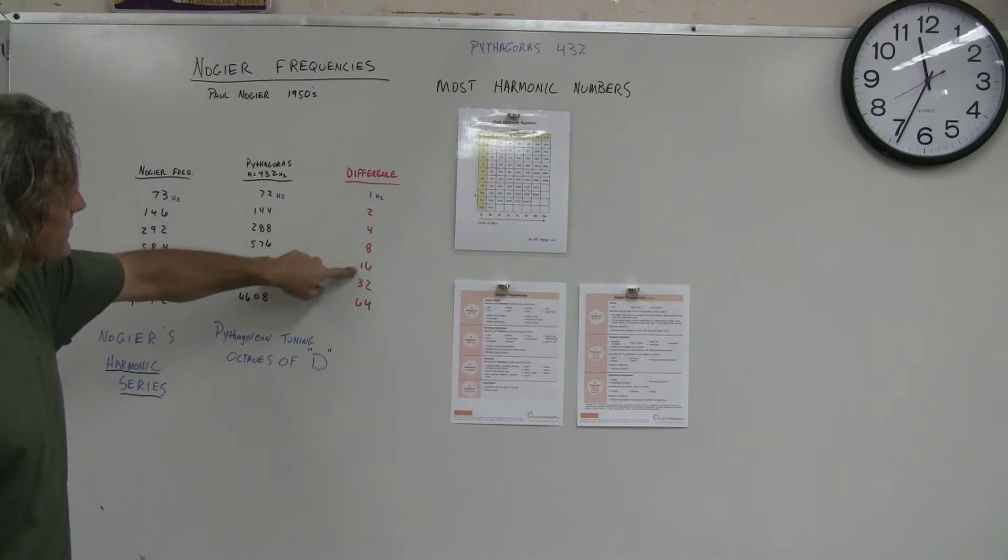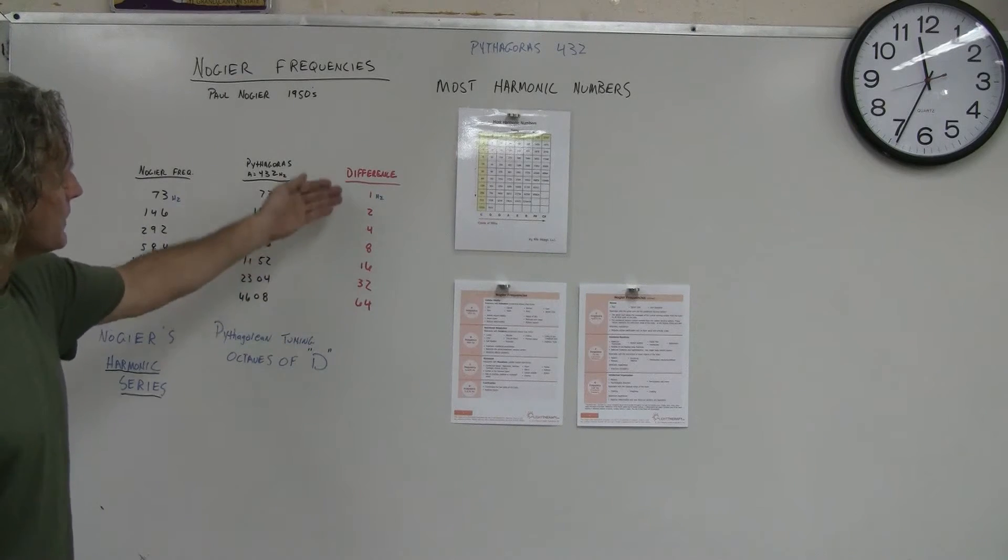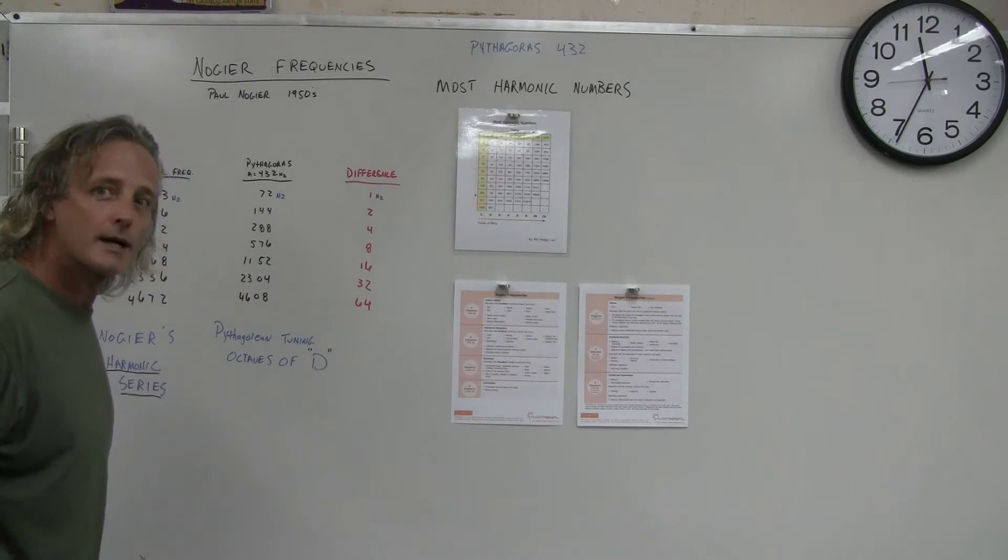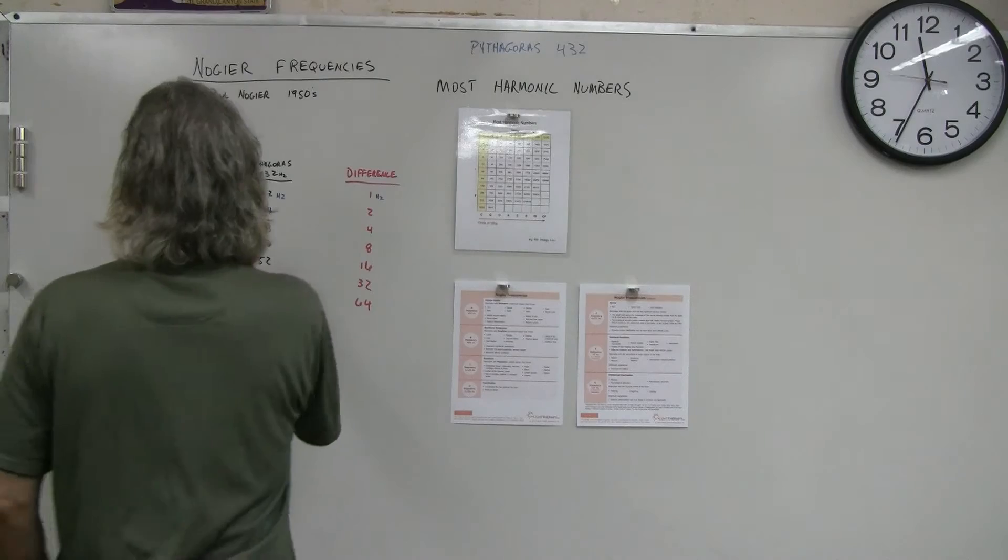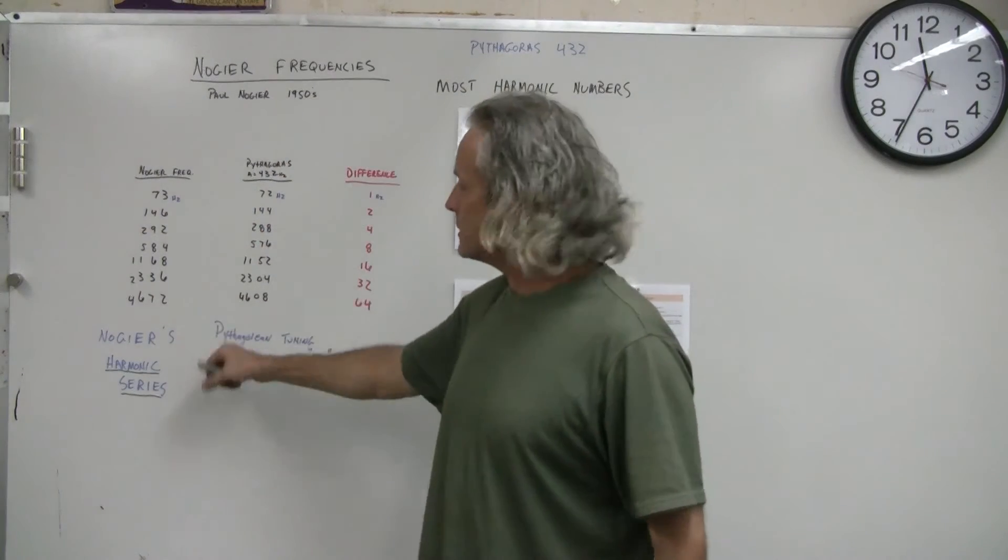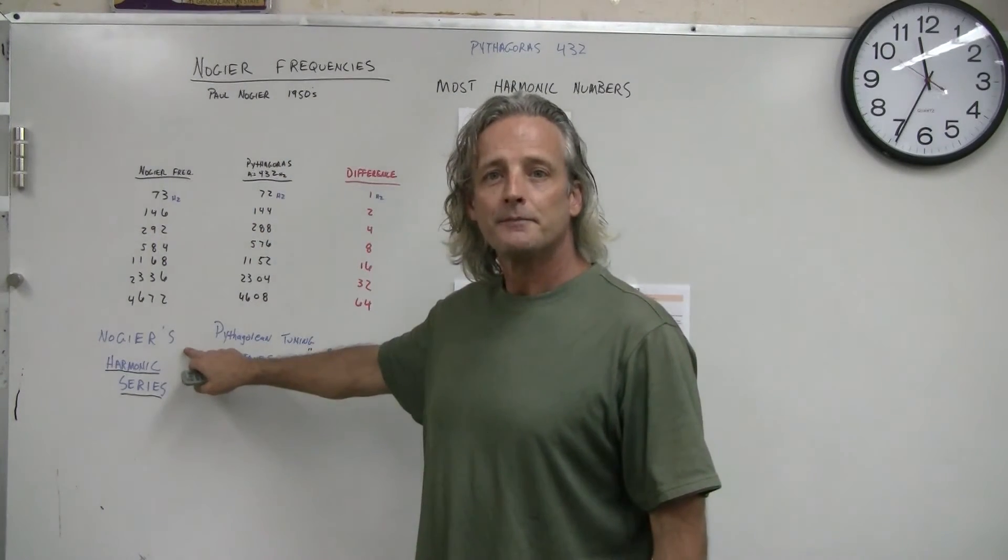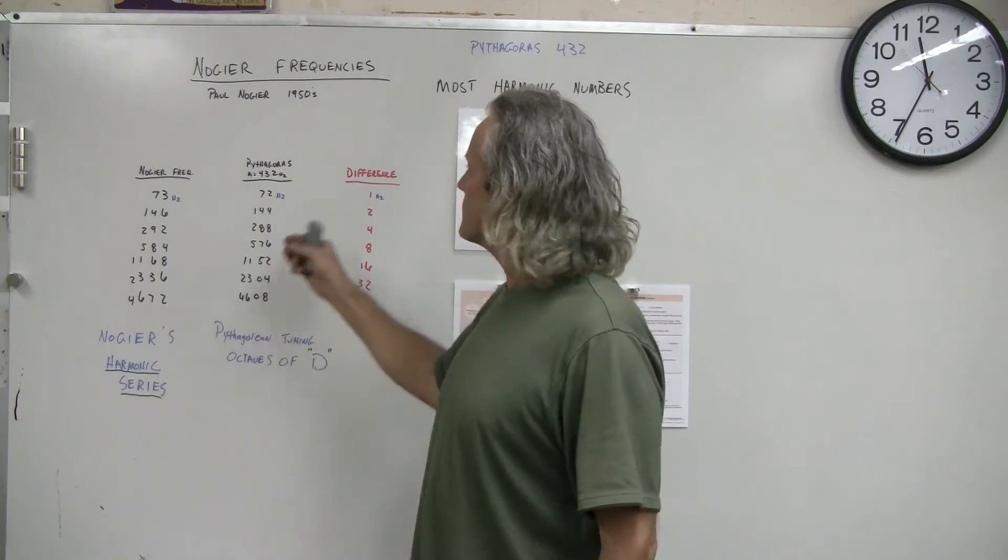584 is 8, 16, 32, 64. You see that doubling that's going on there? What Nogier did with his frequencies is essentially he just created a harmonic series. Nogier created a harmonic series on Pythagoras' work.